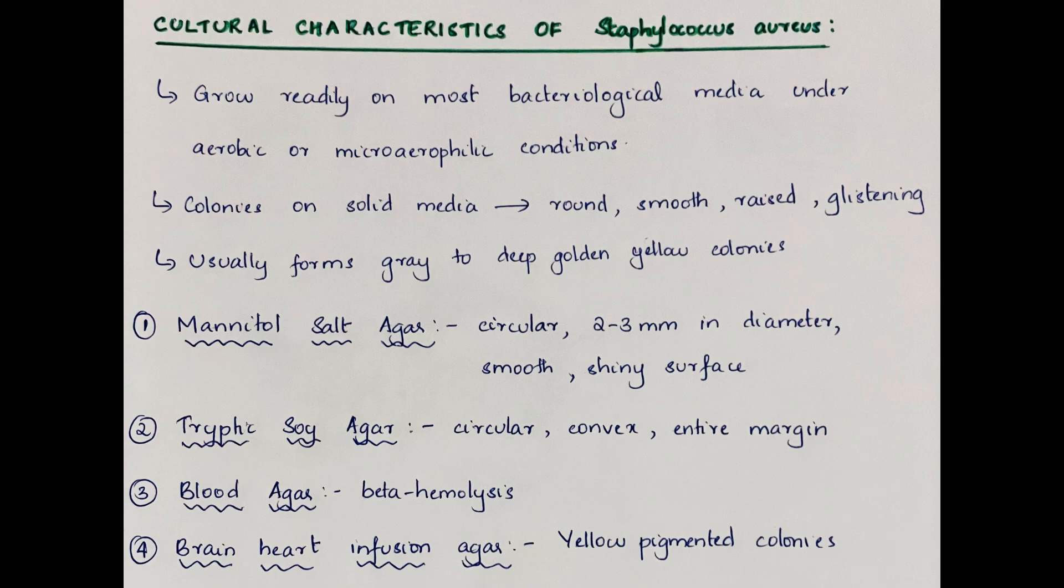Cultural characteristics of Staphylococcus aureus. Staphylococci grow readily on most bacteriologic media under aerobic or microaerophilic conditions. Colonies on solid media are round, smooth, raised and glistening. Staphylococcus aureus usually forms gray to deep golden yellow colonies.